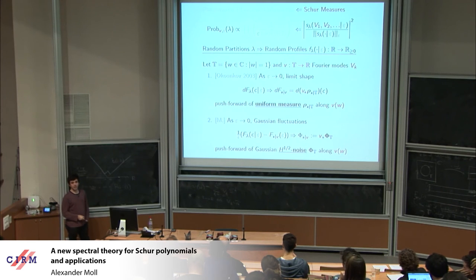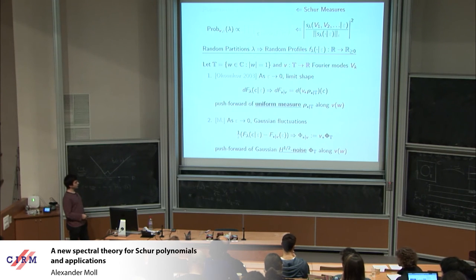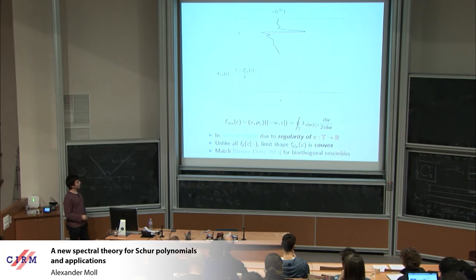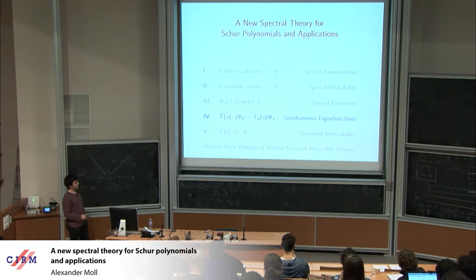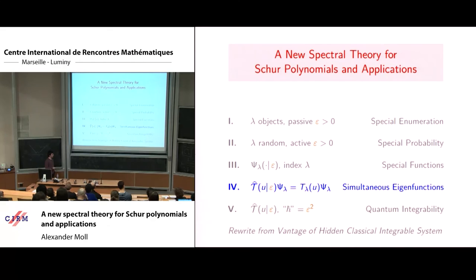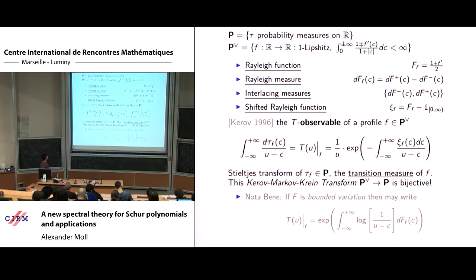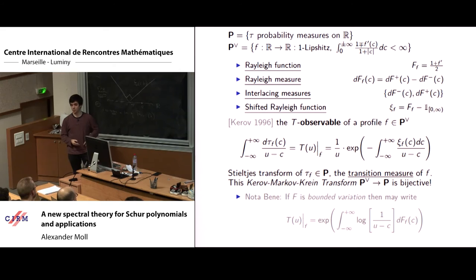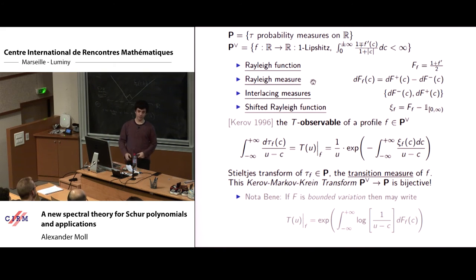These limit theorems are one application of the theory of Schur polynomials, giving us a hint as to further structures. Let me start now with a new point of view on Schur polynomials through eigenfunctions. At the bottom of this dense slide is a major result of Kerov's, which is the heart of his theory of interlacing measures. I'm going to give a more careful analytic theory of what I discussed informally so far.